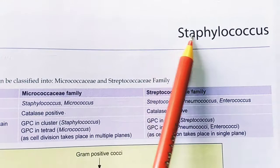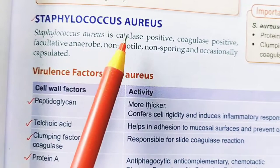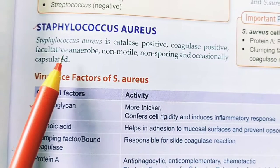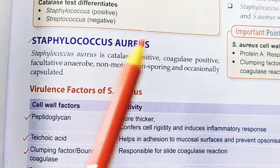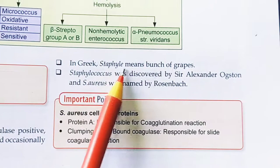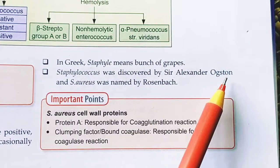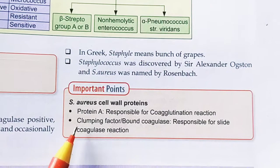Hello everyone, I am Shahan Layak and today I will discuss about Staphylococcus. The first topic is Staphylococcus aureus, which is the most important Staphylococcus. S. aureus is catalase positive, coagulase positive, facultative anaerobe, non-motile, and non-sporing, but occasionally capsulate. In Greek, 'staphyl' means bunch of grapes. Staphylococcus was discovered by Sir Alexander Ogston, and S. aureus was named by Rosenbach. S. aureus cell wall proteins are Protein A and clumping factor.